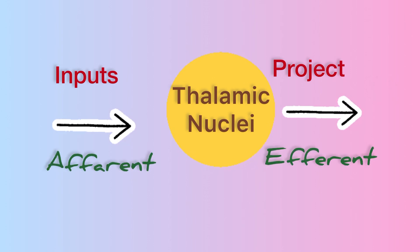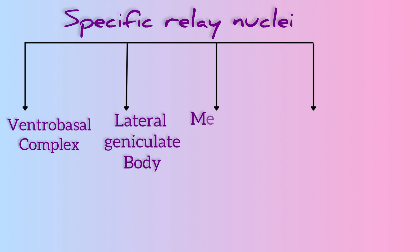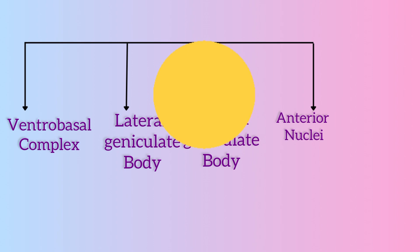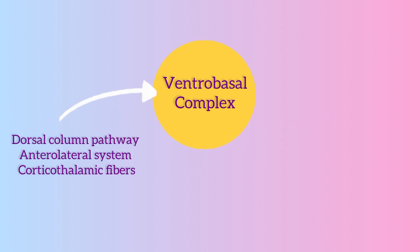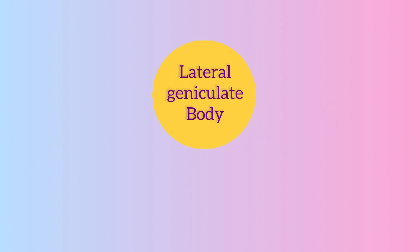Starting with specific relay nuclei, these comprise the ventrobasal complex, lateral geniculate body, medial geniculate body, and anterior nucleus. The ventrobasal complex receives input from the dorsal column pathway, the anterolateral system, and corticothalamic fibers, and projects to the somatosensory cortex.